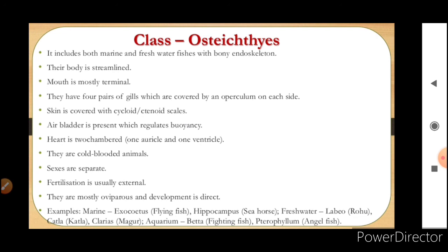Sexes are separate in Osteichthyes and fertilization is usually external, unlike the internal fertilization in Chondrichthyes. They are mostly oviparous and development is direct. Examples: marine — Exocoetus (flying fish), Hippocampus (seahorse); freshwater — Labeo (rohu), Katla, Clarias; aquarium fish — Betta, Pterophyllum.